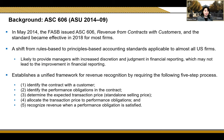Briefly talking about ASC 606: in May 2014, the FASB issued the standard, and it became effective in 2018 for most firms. This is a shift from rule-based to principle-based accounting, which may provide managers with increased discretion and judgment in financial reporting, which may not lead to improvement. The standard establishes a unified framework for revenue recognition by requiring a five-step process: first, identifying the contract with the customer; second, identifying the performance obligations in the contract; third, determining the expected transaction price, which is the standalone selling price; fourth, allocating the transaction price to performance obligations; and lastly, recognizing revenue when a performance obligation is satisfied.